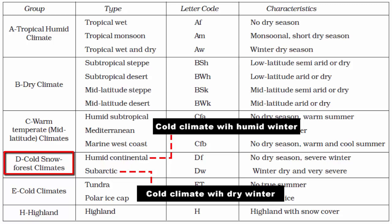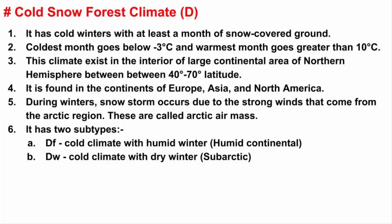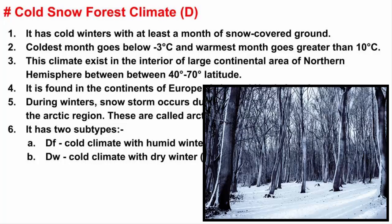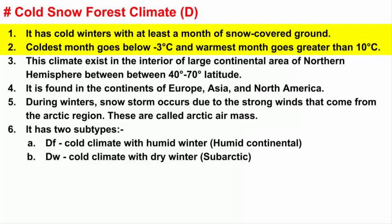The second type is Cold Climate with Dry Winter, which also has a second name called Subarctic Climate, represented by capital letter D and small letter W. When we say Cold Snow Forest Climate, think of this picture. The main feature of this climate is the cold winters, with at least a month of snow-covered ground.